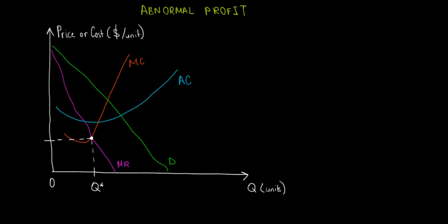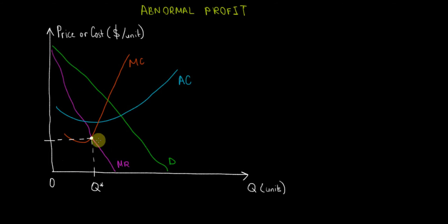In this video I would like to show the abnormal profit on a graph. Suppose we have the following curves: the demand curve, the marginal revenue curve, the marginal cost curve, and the average cost curve.